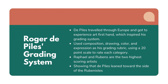Roger de Piles traveled through Europe and got to experience incredible art pieces firsthand, and it inspired him to create a grading system after these two conflicting ideas had been around for a while. He used composition, drawing, color, and expression as his grading rubric, with a 20-point scale for each category that summed together for the art piece. Raphael and Rubens were the two highest-scoring artists on the scale.